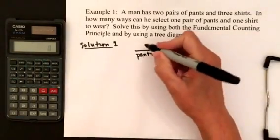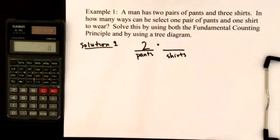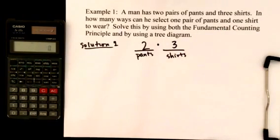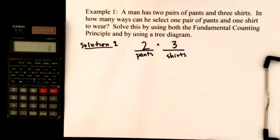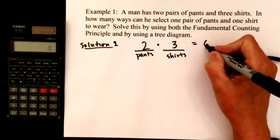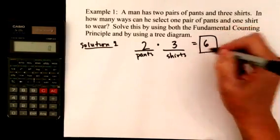He has two pairs of pants, so put a two in the blank for pants. And then he has three shirts, so we'll put a three in the blank for shirts. And with the fundamental counting principle, we'll just multiply those two numbers together. Two times three is six. So there are six ways he can select one pair of pants and one shirt to wear.